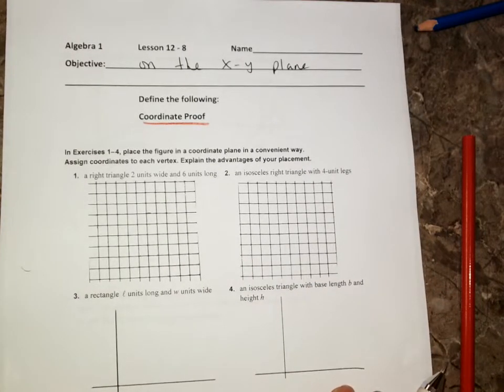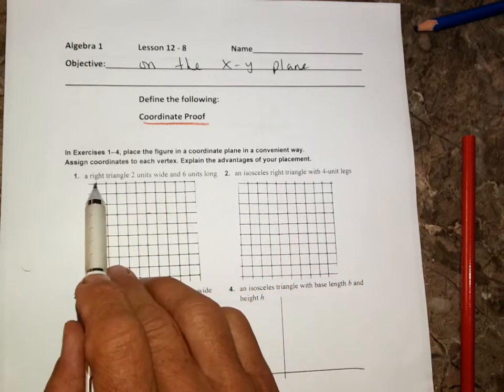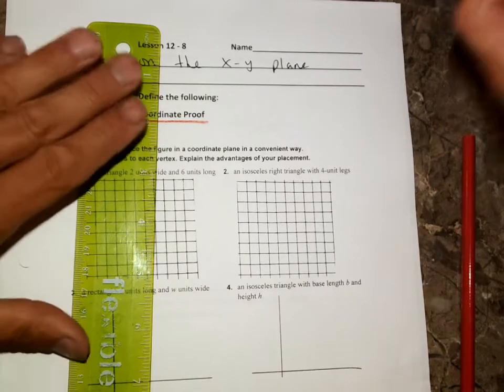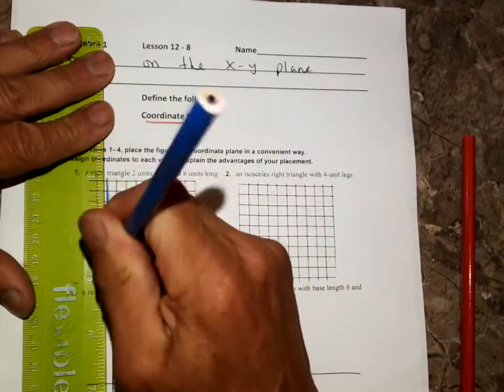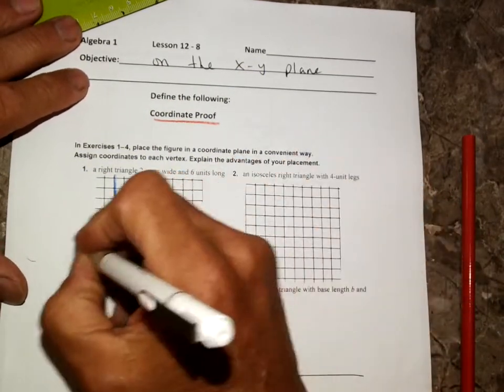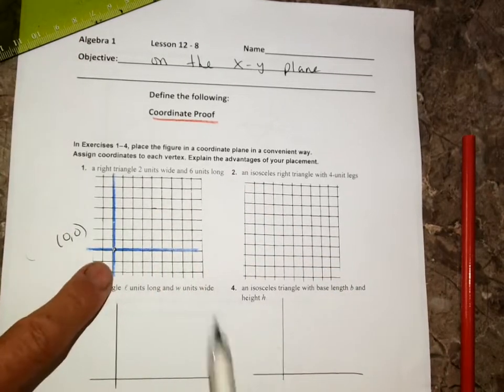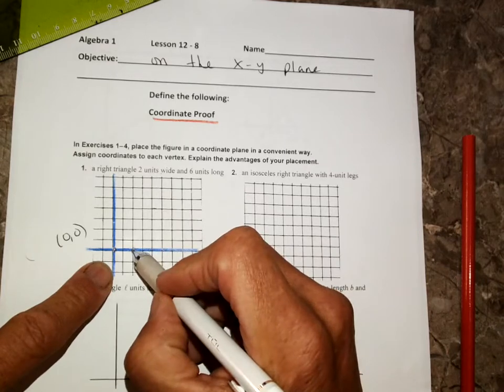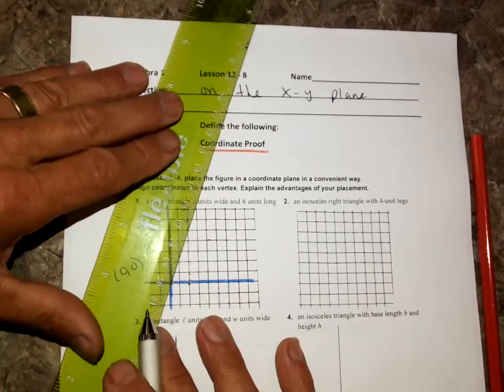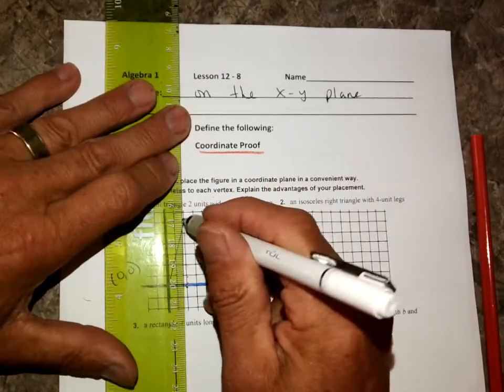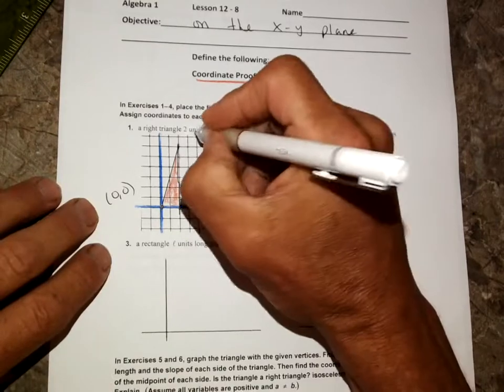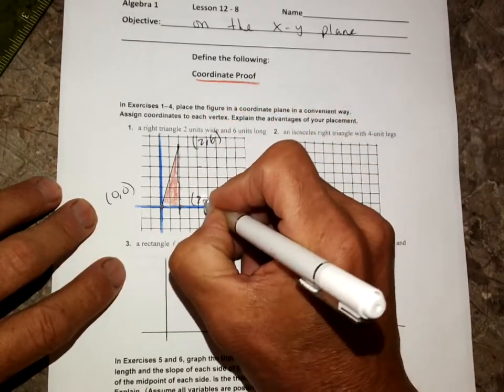Sometimes it's pretty easy, and other times what we want to do is get a general form. We're talking about a rectangle L units long. Let's do number one first. Assign coordinates for each vertex, explain the advantage. We've got a right triangle, two units wide, and six units long. I like to start at the origin most of the time, because 0, 0 is the easiest place to start, right? My coordinates of this would be at 2, 6, and at 2, 0.